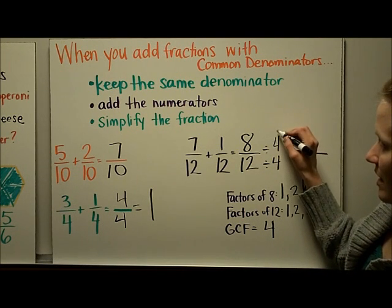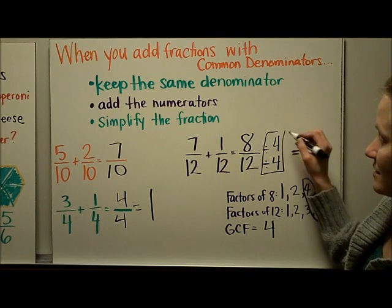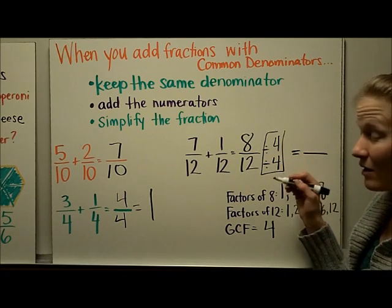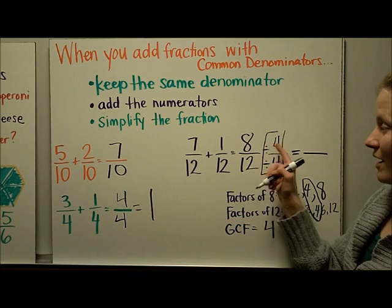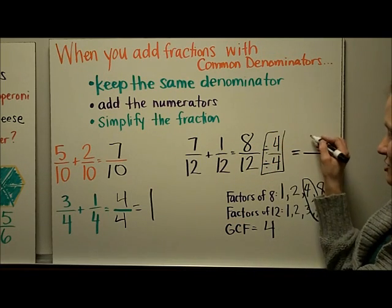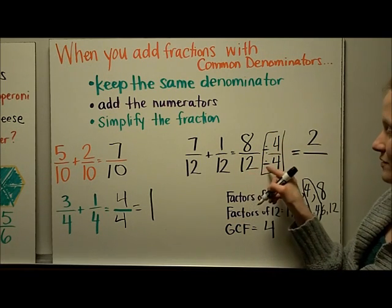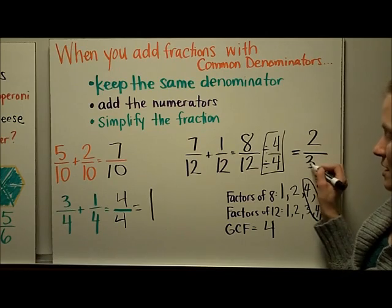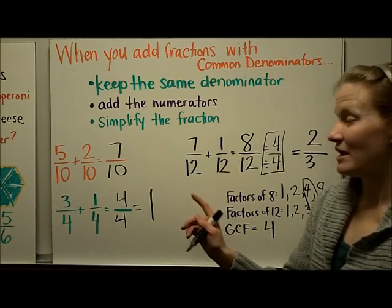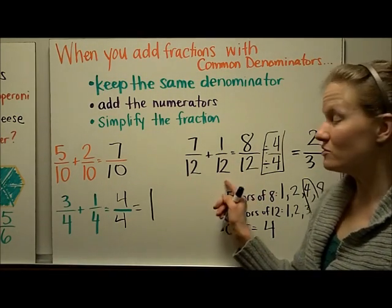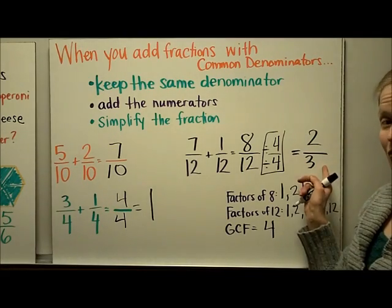Remember, dividing by a fraction that has the same number on the top and the bottom is like dividing by 1. So 8 divided by 4 is 2. 12 divided by 4 is 3. So the answer, the simplified answer to 7/12 plus 1/12 in simplest form is 2/3.